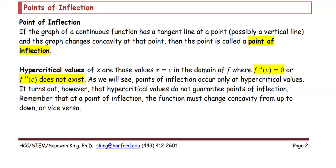Points of inflection. If the graph of a continuous function has a tangent line at a point, possibly a vertical line, and the graph changes concavity at that point, then the point is called the point of inflection.